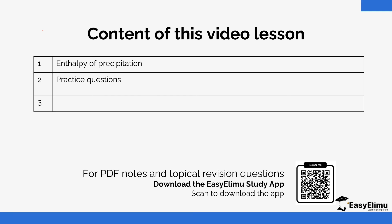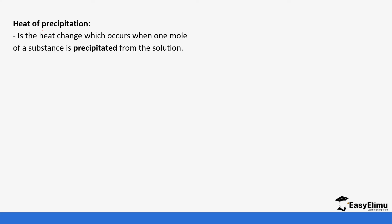In this lesson we identify what is enthalpy of precipitation and then we do our questions in regards to the same. Heat of precipitation, or enthalpy of precipitation, is the heat change which occurs when one mole of a substance is precipitated from its solution.